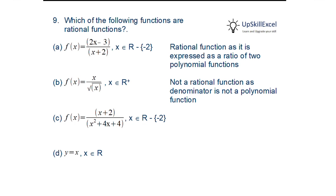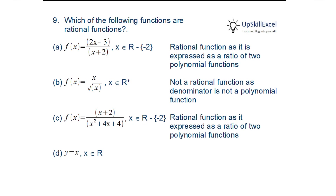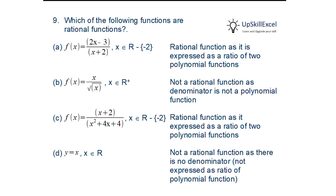f(x) = (x+2)/(x²+4x+4): both numerator and denominator are polynomial functions, so this is a rational function. y = x is not a rational function as there is no denominator (it cannot be expressed as a ratio of two polynomials).